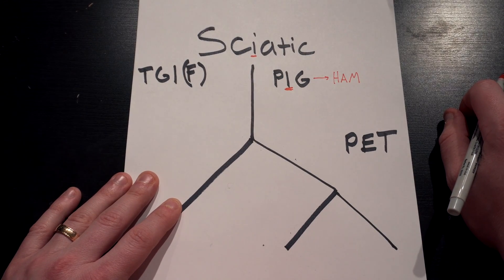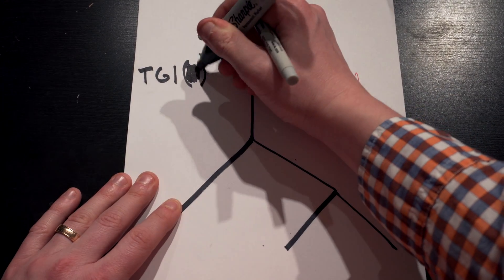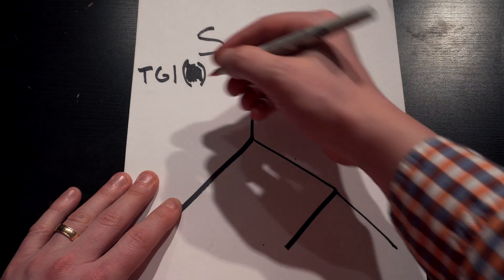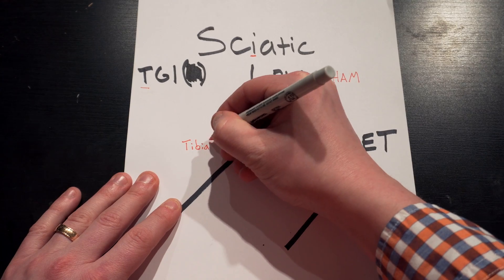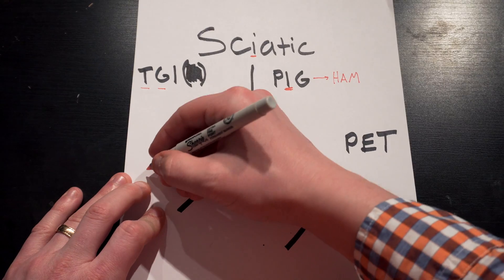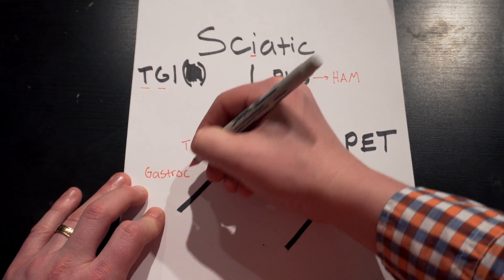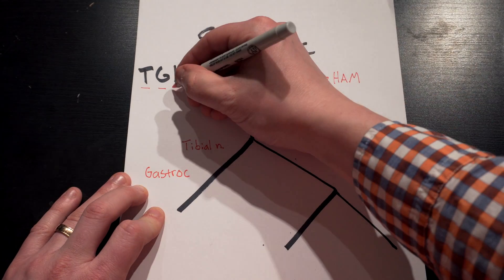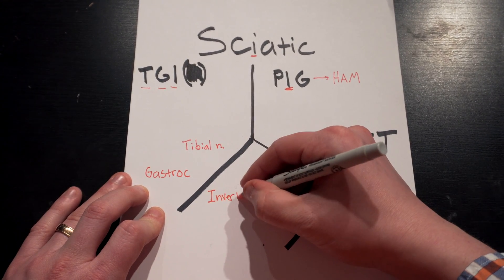We have our first split and we'll start on the TGIF side. TGIF is a way to really remember TGI — we'll get rid of the F. The T is the nerve — the tibial nerve. The G tells us we're activating our gastroc muscles, and the gastroc muscle is going to plantar flex the foot. And then the I is inversion — so we invert the foot.